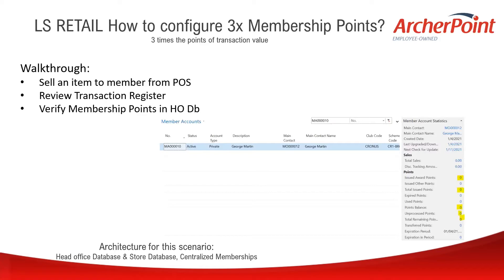This is where you can use and configure additional membership points. The example here assumes that there is a head office database and a store database — a distributed environment — and the memberships are centralized. Any functions related to membership, like searching a particular member or creating a new member, would be done from the POS station, connecting to the head office database using a web service. The goal is that membership points and membership data are centralized and available in the head office database for review.